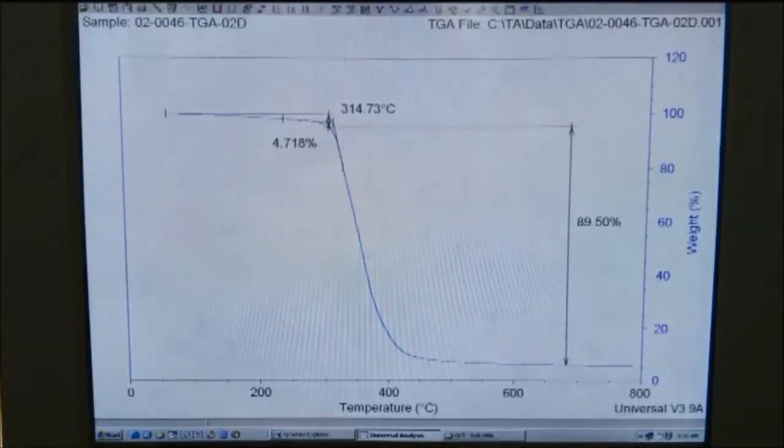The TGA plots the signal converted to percentage weight change against the temperature.